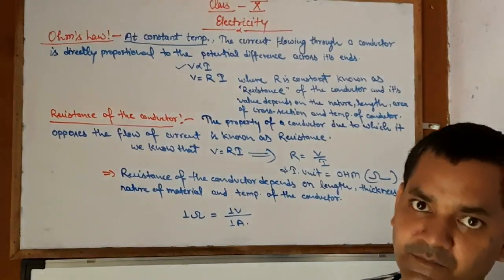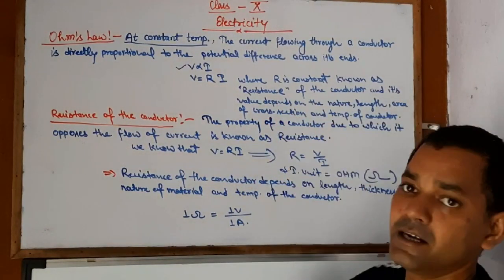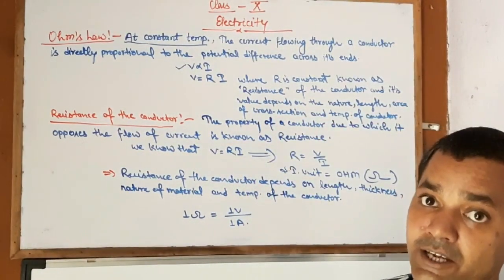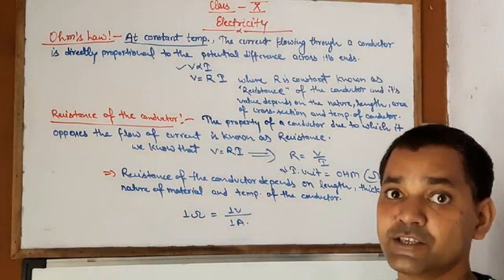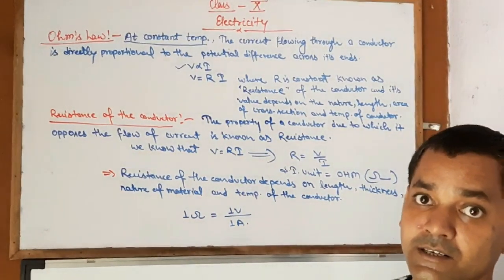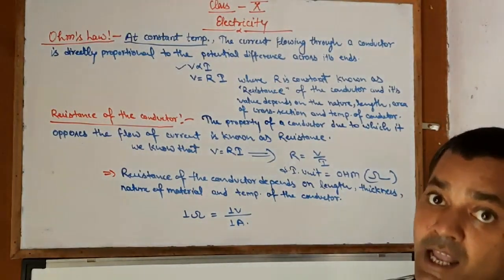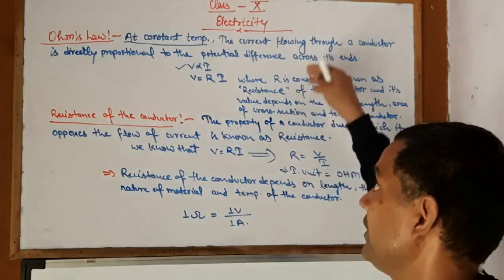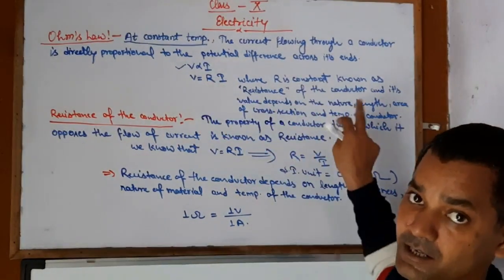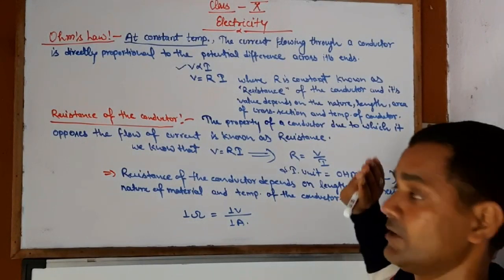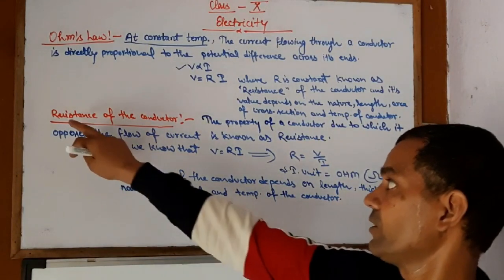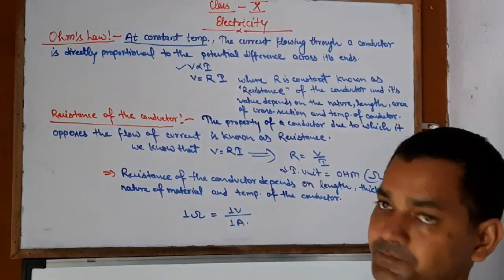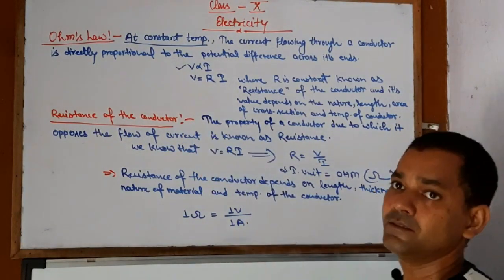The name of R is resistance of the conductor. Its value depends on the nature of the material, temperature of the conductor, area of the cross-section, and length. It is clear. Now we come to the topic: resistance of the conductor.